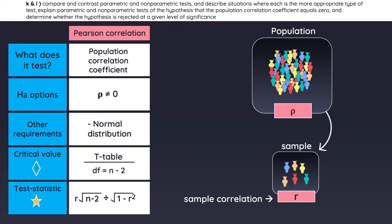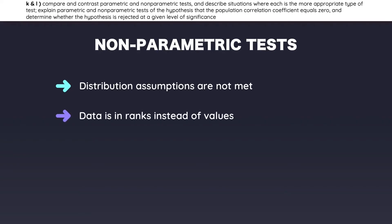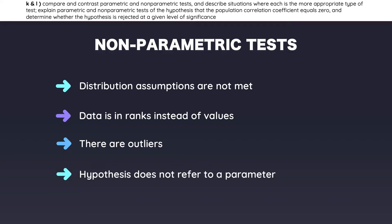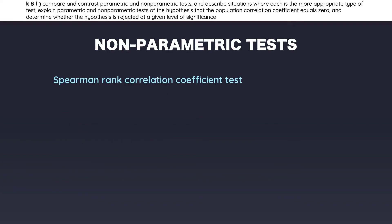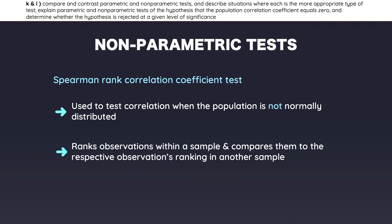Sometimes the data being analyzed is not suitable for the tests we have discussed in this reading — that's why nonparametric tests exist. For example, nonparametric tests are often used when the necessary distribution requirements are not met, when the data is in ranks instead of values, when there are outliers, or when the hypothesis does not concern a population parameter. A very common nonparametric test is the Spearman rank correlation test, used to test correlation when the population is not normally distributed. This test ranks observations within a sample and compares those rankings to another sample's.